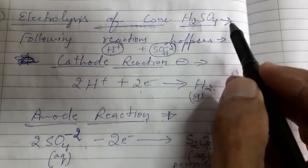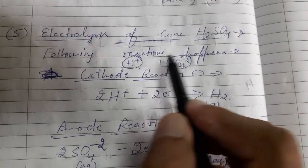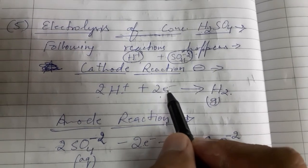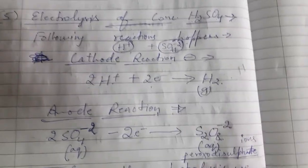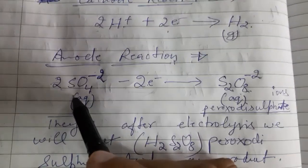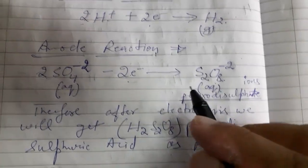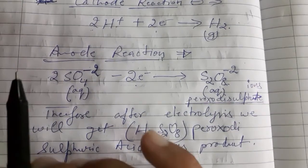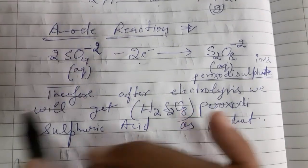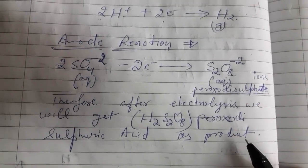Finally, the last example is electrolysis of concentrated sulfuric acid, H₂SO₄. It contains H⁺ ions and sulfate ions. At the cathode, H⁺ ions gain electrons and get reduced into hydrogen gas, so hydrogen gas is liberated at the cathode. The anode reaction is different and important to learn: two sulfate ions lose two electrons and get converted into S₂O₈²⁻ ions, called peroxodisulfate ions. Therefore, after electrolysis, we get H₂S₂O₈ — peroxodisulfuric acid — as a product in place of the sulfuric acid solution.